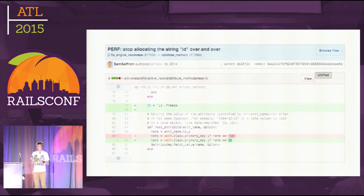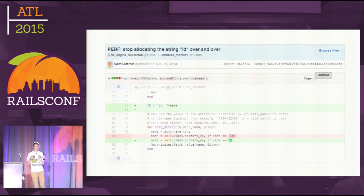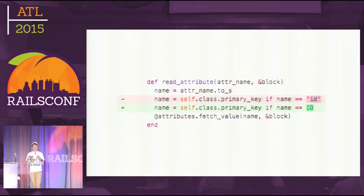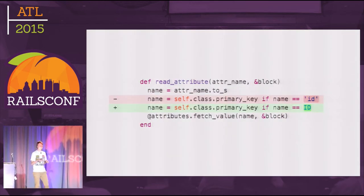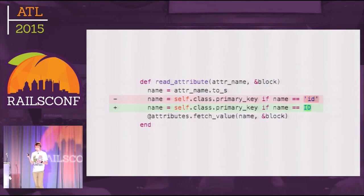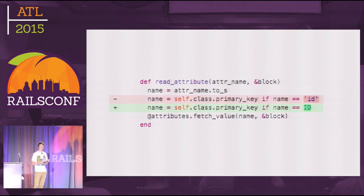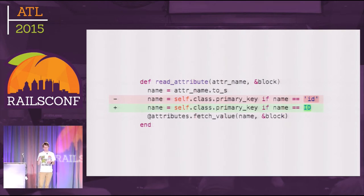Here's another example by Sam Safran, who is actually in this room. The problem was that this code was called on every ActiveRecord attribute read. Reading attributes is the core functionality of ActiveRecord, and on every attribute read, we allocated a new string. By moving the string into a constant and freezing it, Sam reduced the number of allocated objects on the Discourse front app by 5,000 — just by moving one string to a constant.